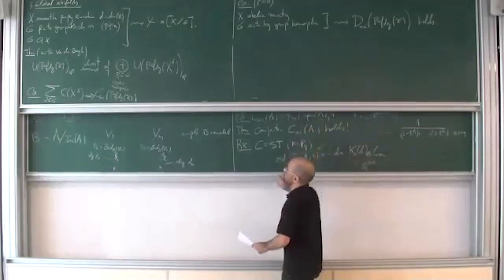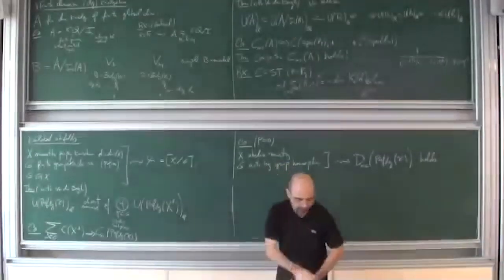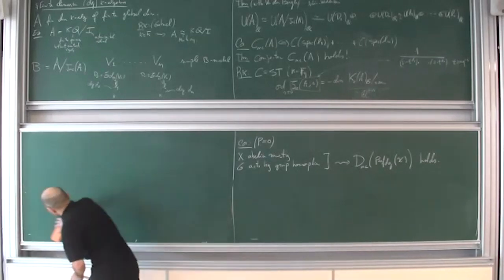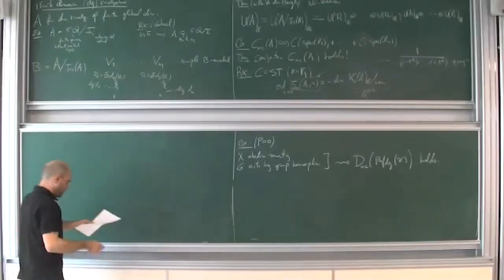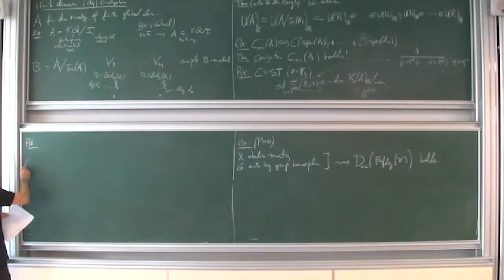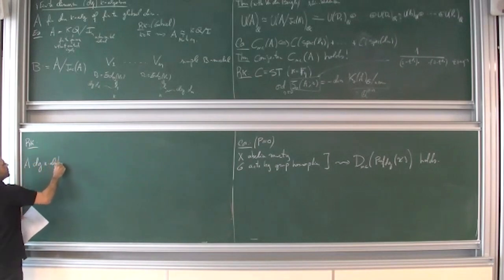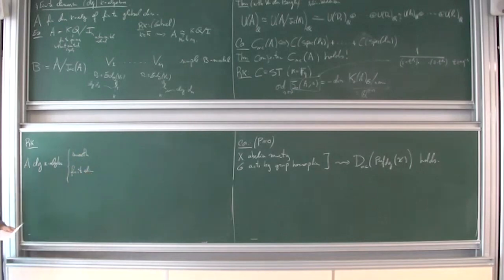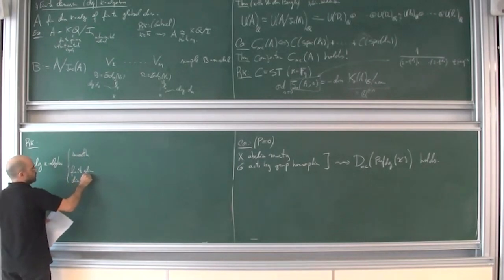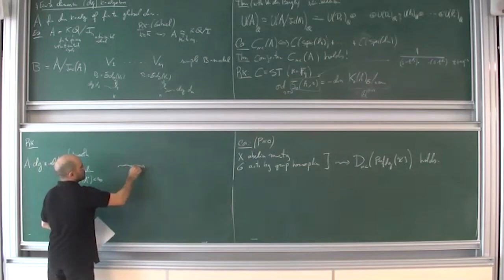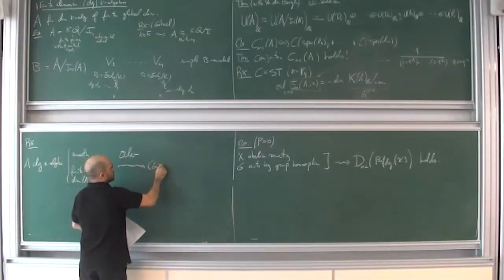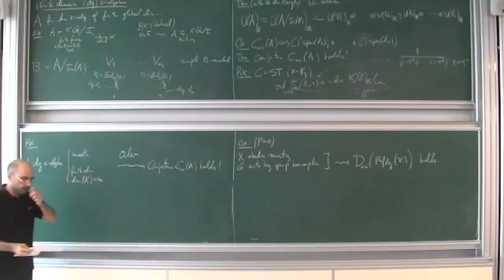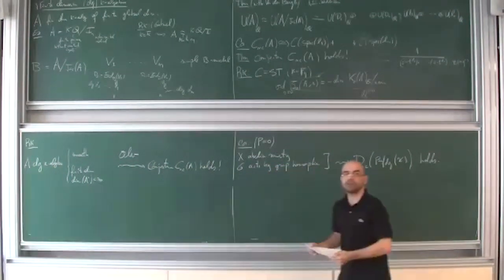This result generalizes: by recent work of Orlov, one can extend to smooth DG algebras that are finite-dimensional in the strong sense that each component is finite-dimensional (not just the cohomology). The strong Tate conjecture holds for this class of DG algebras as well, via a slightly different argument.